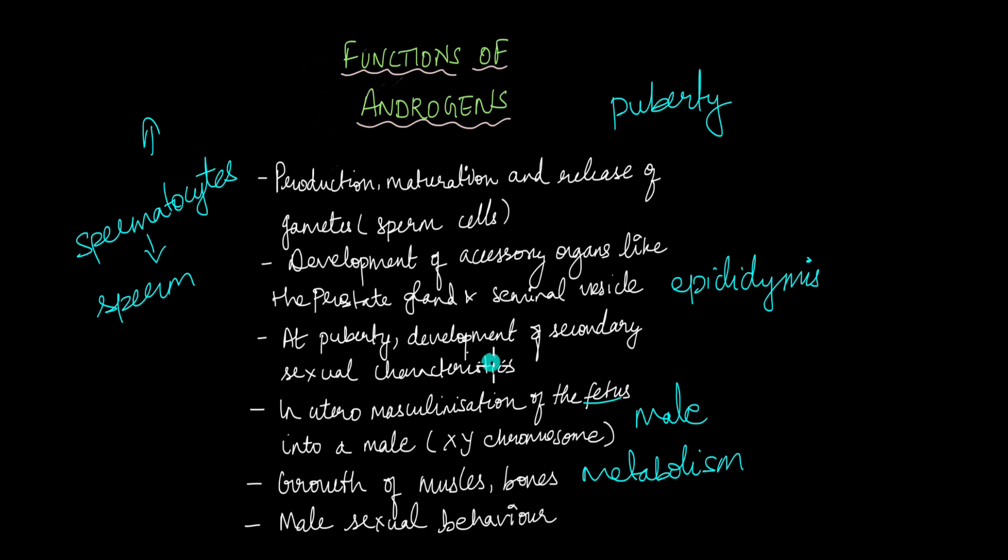The development of secondary sexual characteristics like I mentioned: the facial hair growth, the voice changing, the protrusion of the Adam's apple, the increase in height, the increase in muscle mass, especially during puberty. All those secondary sexual characteristics are caused by the increased level of androgens in our body. So these are some of the functions of androgens.